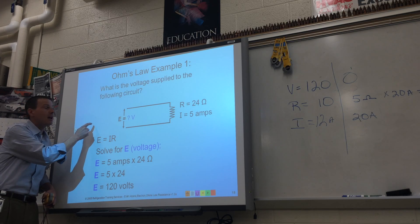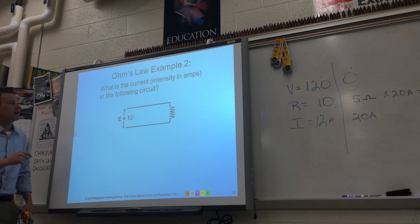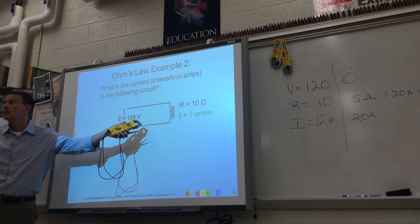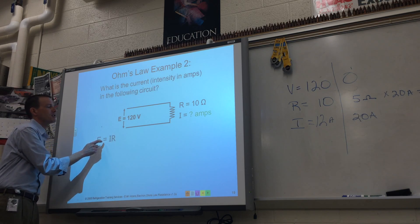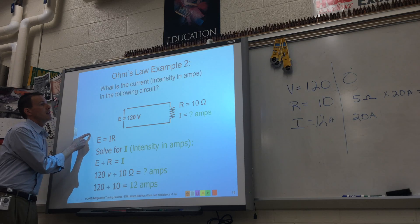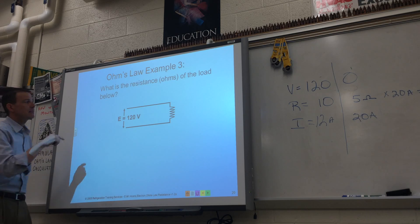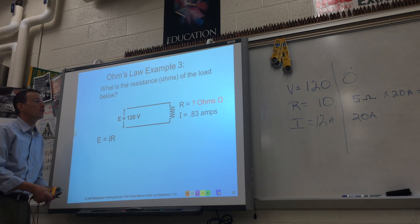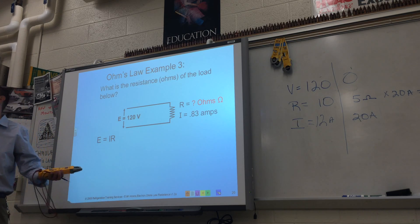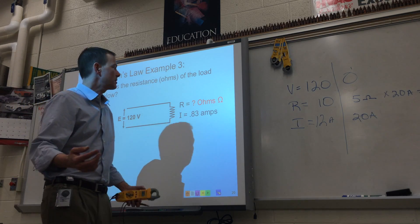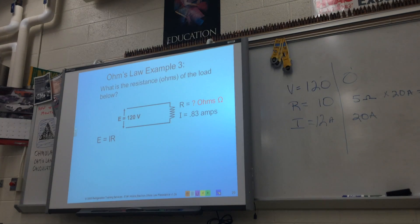All right, number two: we know the voltage and the resistance, what's the amp draw? Twelve — that's right. Last one: you've got to find the ohms. With voltage and current, divide to get resistance — about 0.83 ohms. You'd need to crack out the calculator. You guys are Ohm's Law masters now. Let me give you some practice problems to work on your own.